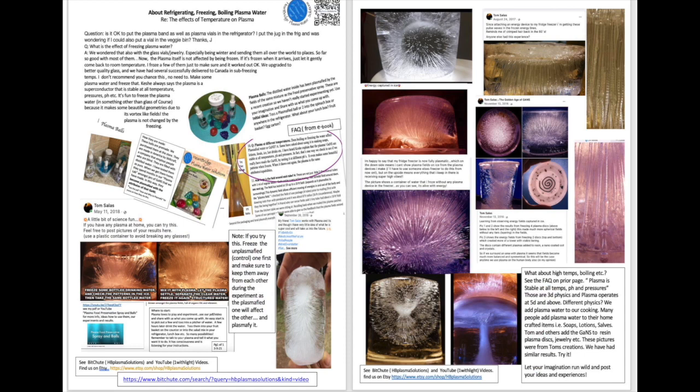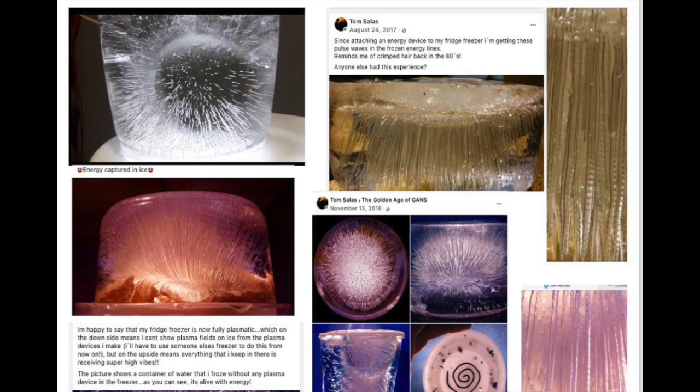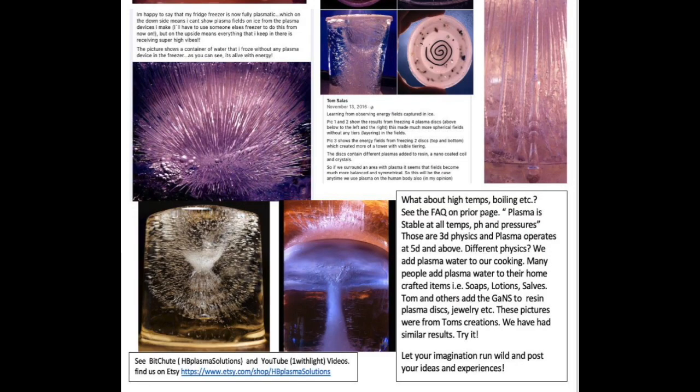Another way you can observe the torus field around plasma is to freeze water that has been plasmified, or that has plasma devices near it, and you can really observe the beautiful patterns made in the water that way. There's a document on our Google Drive and in the ebook regarding the effect of temperatures on plasma. From what Kesh says, and what we've observed, plasma is stable at all pressures, temperatures, and pH levels.